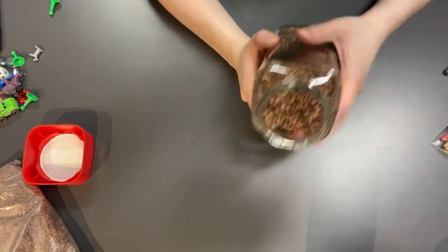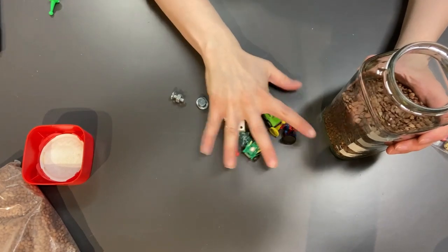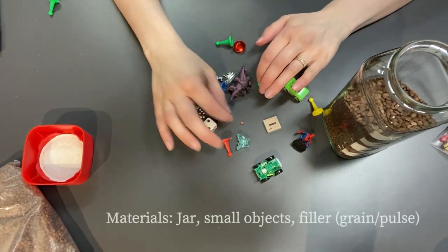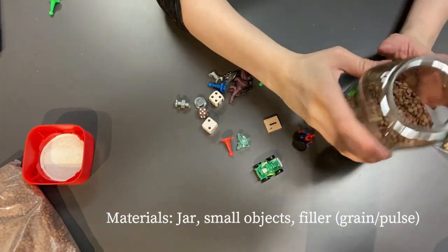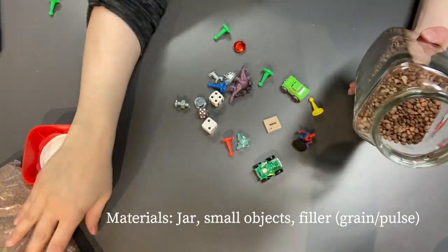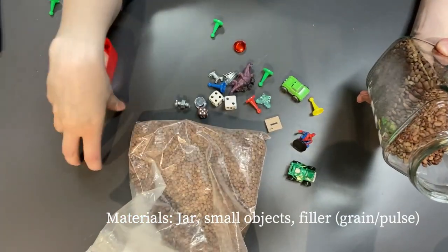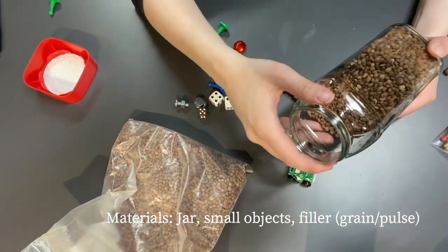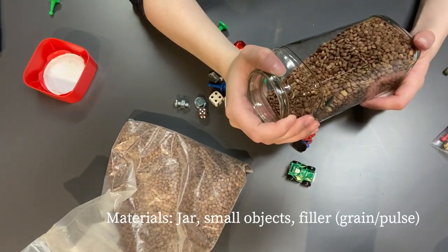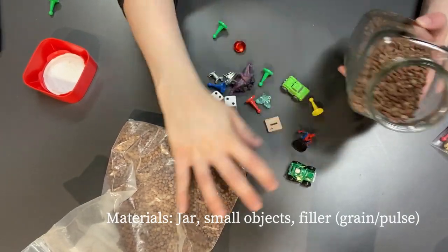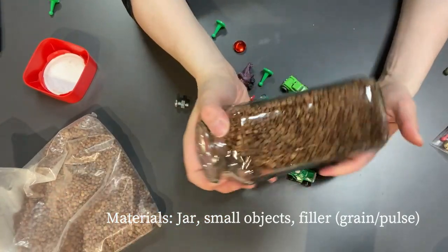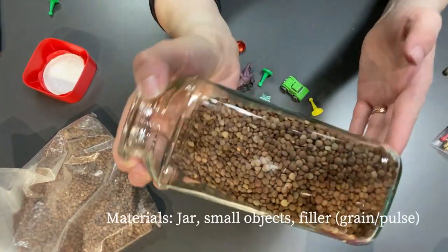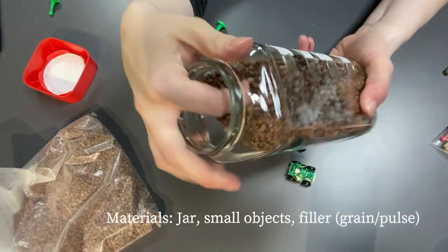The first thing you need is a jar and you need to find some toys or small objects. You need something to fill the jar with. In this case I used lentils, so any dried grain or pulse will work. A lot of people do it with rice, and rice is really fun because you can dye it different colors. I filled my jar about halfway full with these lentils.